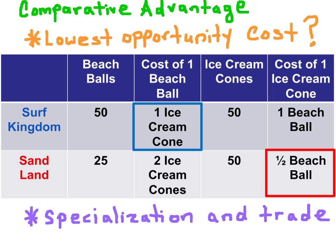To determine the opportunity cost of producing a beach ball, we make beach balls the denominator. So we take 50 ice cream cones divided by 50 beach balls for Surf Kingdom, and we get an opportunity cost of one ice cream cone. Every time Surf Kingdom produces one beach ball, they're sacrificing one unit of ice cream. In Sandland, we take 50 ice cream cones divided by 25 beach balls, giving an opportunity cost of two units of ice cream for every beach ball produced. Because Surf Kingdom has the lower relative opportunity cost in beach ball production, they have the Comparative Advantage.